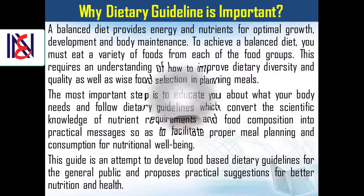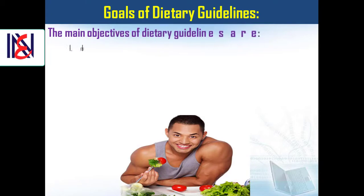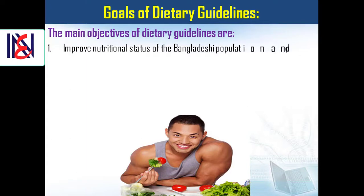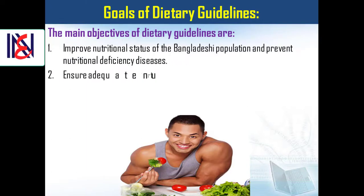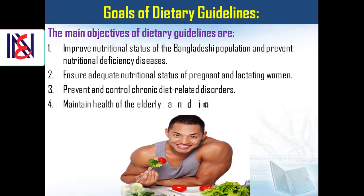Goals of Dietary Guidelines. The main objectives of dietary guidelines are as follows: 1. Improve nutritional status of the Bangladeshi population and prevent nutritional deficiency diseases. 2. Ensure adequate nutritional status of pregnant and lactating women. 3. Prevent and control chronic diet-related disorders. 4. Maintain health of the elderly and increase life expectancy.